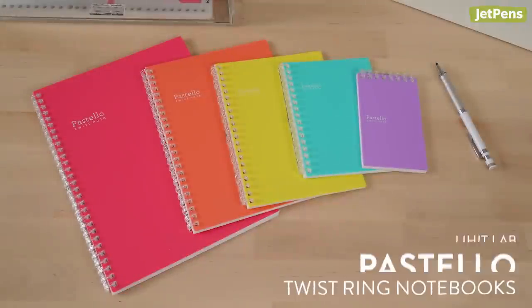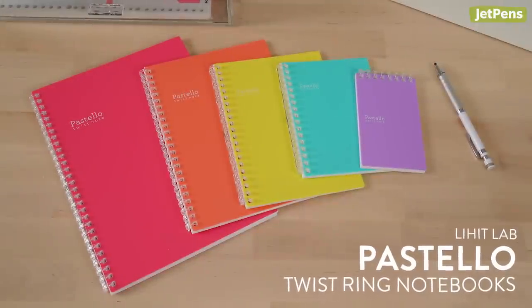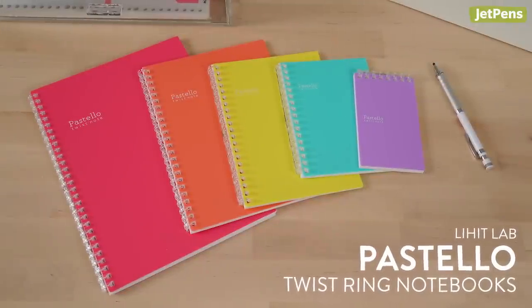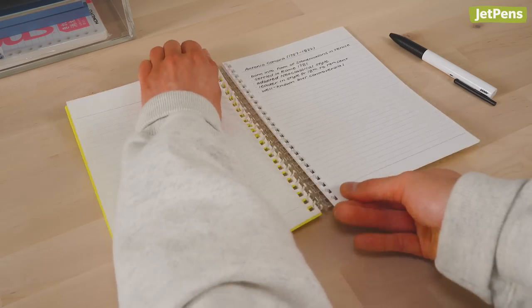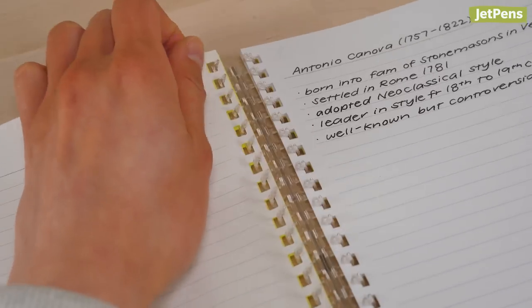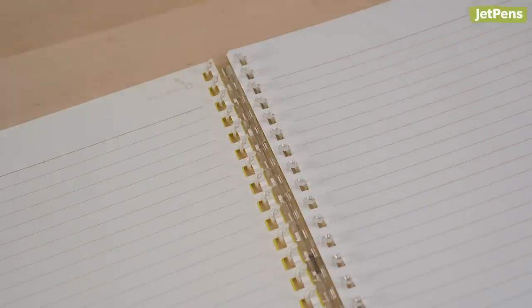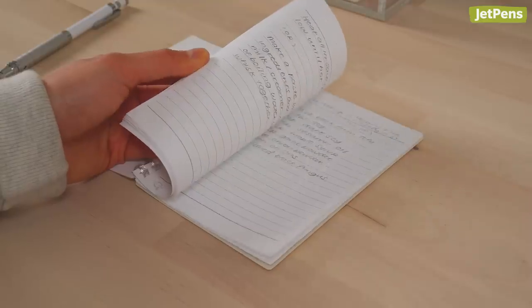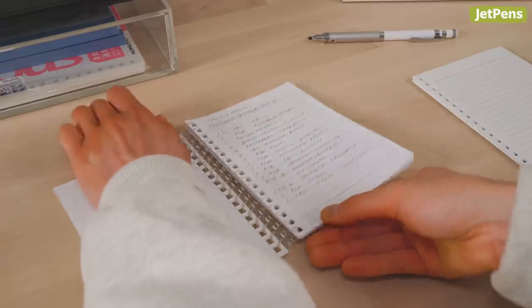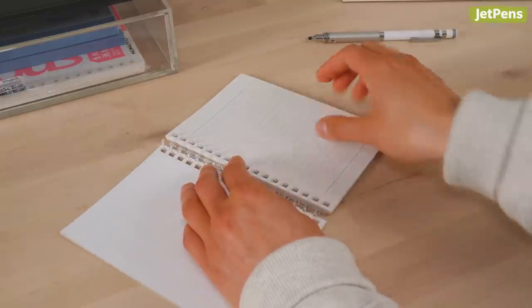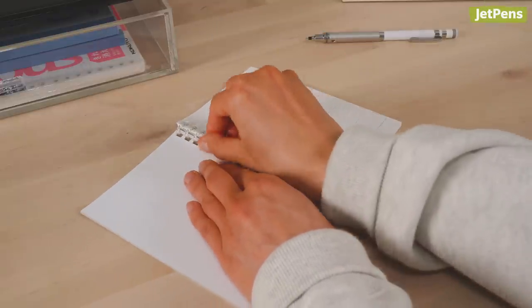If you've ever wanted to rearrange sheets in a notebook, look no further than the Lihit Lab Pastello Twist Ring. A light pull opens the rings, and you'll be able to organize sheets like you would with a binder. Once you've finished using the notebook, just remove the papers and replace them with new loose leaf sheets. Now you have a practically new notebook.